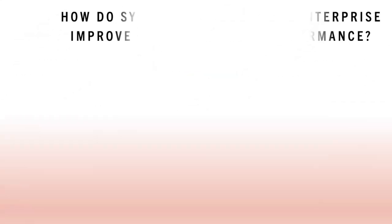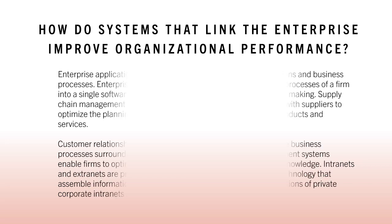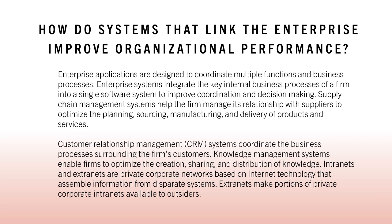Review summary: How do systems that link the enterprise improve organizational performance? Enterprise applications are designed to coordinate multiple functions and business processes. Enterprise systems integrate the key internal business processes of a firm into a single software system to improve coordination and decision making. Supply chain management systems help the firm manage its relationship with suppliers to optimize the planning, sourcing, manufacturing, and delivery of products and services. Customer relationship management systems coordinate the business processes surrounding the firm's customers. Knowledge management systems enable firms to optimize the creation, sharing, and distribution of knowledge. Intranets and extranets are private corporate networks based on internet technology that assemble information from disparate systems, and extranets make portions of private corporate intranets available to outsiders.